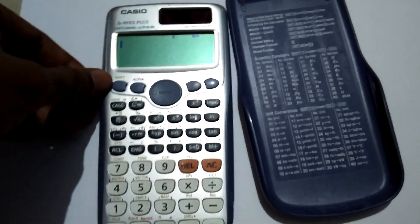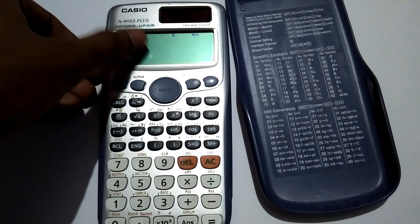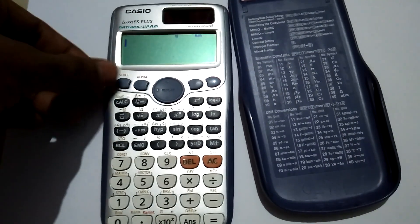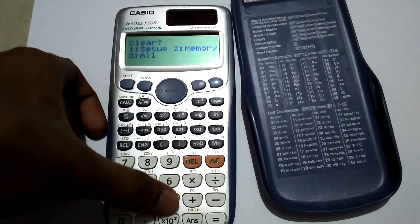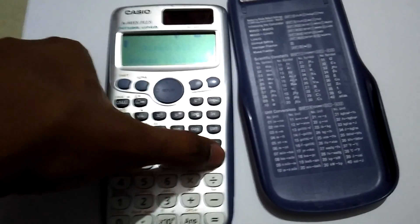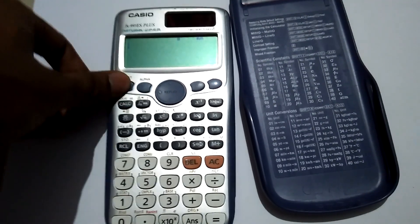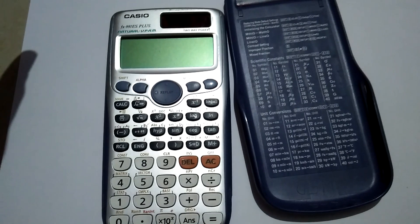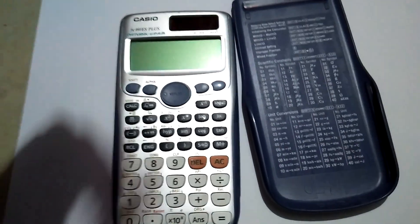Like this, very easily you can reset your Casio FX 991 ES Plus: Shift, 9, 3, equals, AC. Just click Shift and AC to turn it off. Okay friends, if you like this video, like.